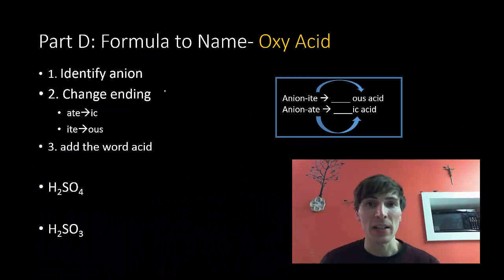So first off, I want to start with the oxyacids. Hence the name, they have oxygen in them. This also means you're going to need to be looking at your polyatomic ion sheet. We need to identify which anion hydrogen is paired up with. That's the very first thing. It will end in ate or ite. Once we've done that, we need to change the ending, and then we're going to add the word acid at the end.